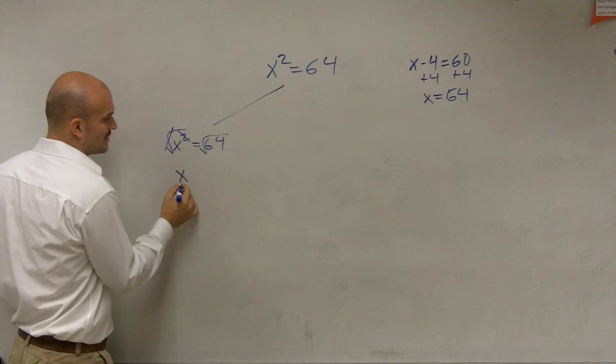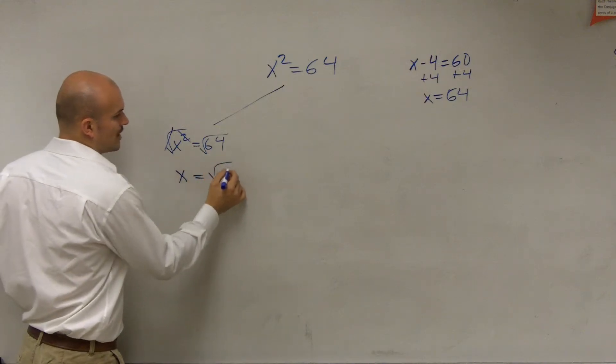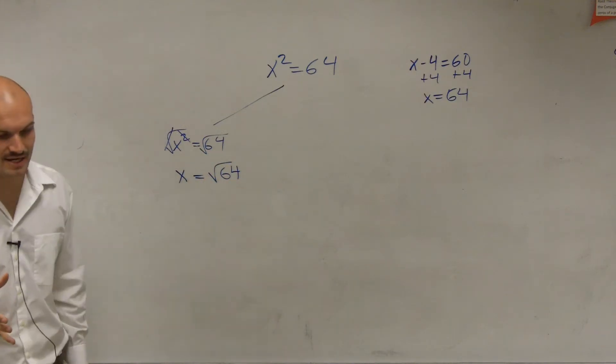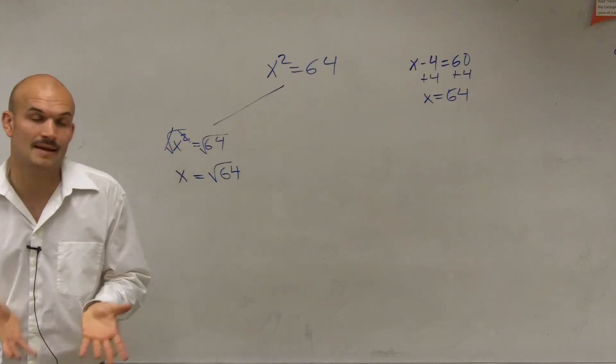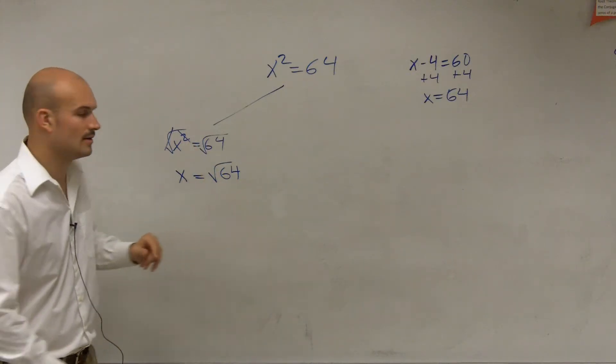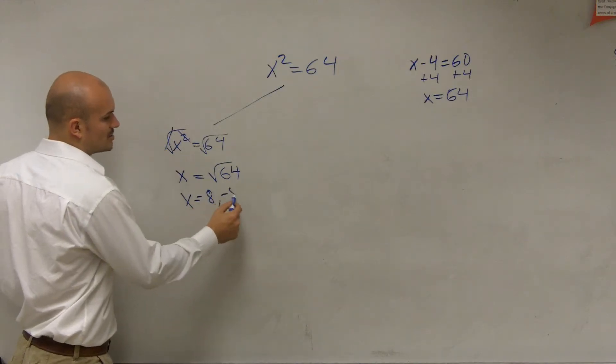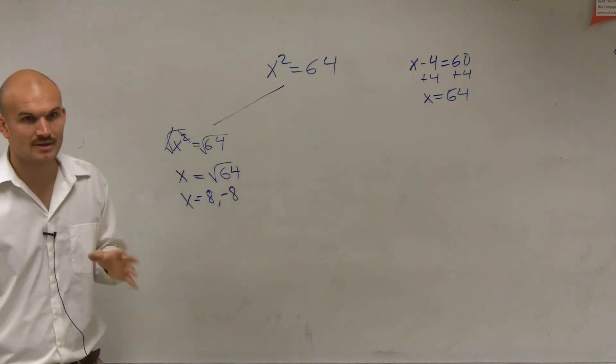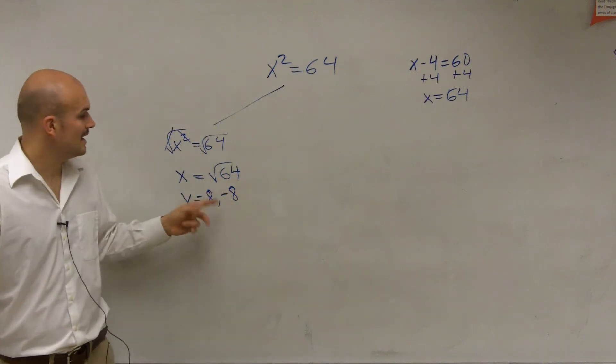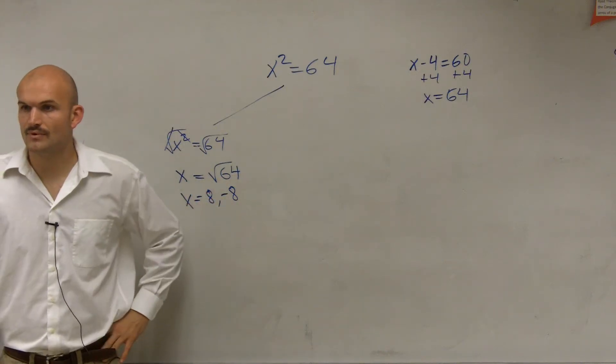So therefore, I'm left with x equals the square root of 64. So the square root says, what two numbers that are exactly the same multiply to give us 64? Well, the answer for that is 8, but also negative 8. Because negative 8 times negative 8 is 64, and 8 times 8 is 64.